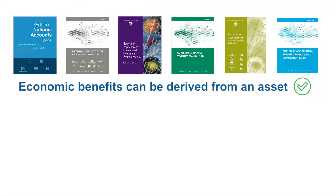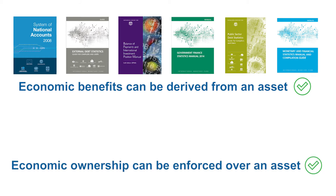From this we will then derive the definition of assets and liabilities. In macroeconomic statistics, we only record economic assets from which economic benefits can be derived and over which economic ownership rights can be enforced. Note that both these conditions need to be satisfied for an asset to be an economic asset.